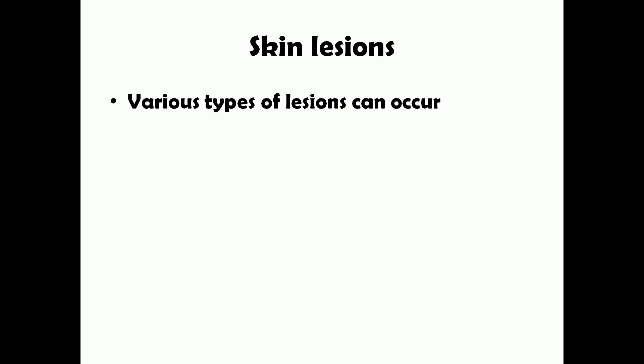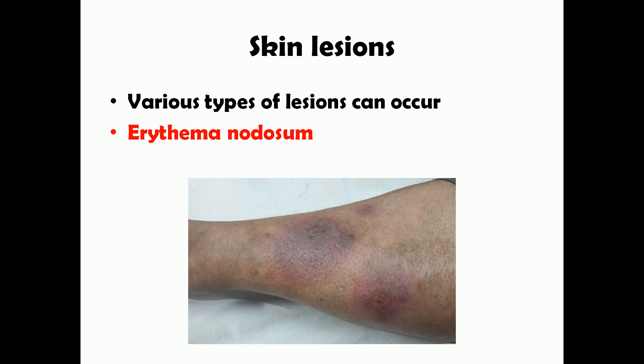Various types of skin lesions can occur, such as erythematous plaques — red lesions on the skin — which can bring the patient to the doctor. The most common skin lesion in sarcoidosis is erythema nodosum. This is not a disease of the upper skin layers; it is inflammation of the subcutaneous tissue beneath the skin, presenting as red lesions that feel raised above the normal skin surface on palpation.